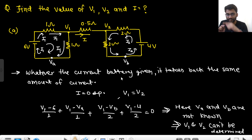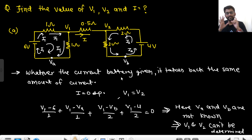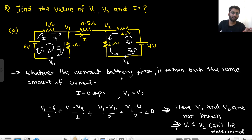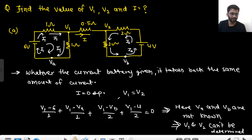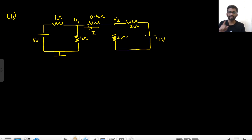What did I say? Whatever current the battery gives, it has to take back the same amount of current. Many times I have seen teachers saying the complete current will be flowing in the loop — but this is not the concept. The current given by the battery is the same current getting back into the battery. The same applies for the 4 volt battery. Let's move on to the next circuit.